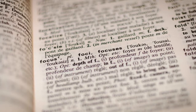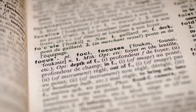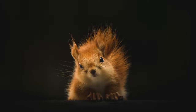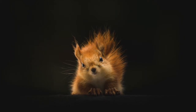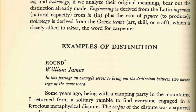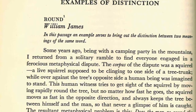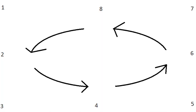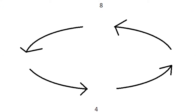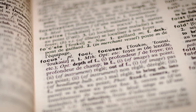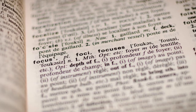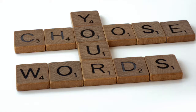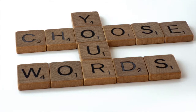Although one or two of the hotter disputants called my speech a shuffling evasion, saying they wanted no quibbling or scholastic hair-splitting, but meant just plain, honest, English 'round,' the majority seemed to think that the distinction had assuaged the dispute. This fun little story illustrates, in a simple way, how important making distinctions can be. The trick of the story relies on an ambiguity in the definition of the word 'round,' and looking up the word in a dictionary wouldn't actually have settled the argument, since the dictionary contains both of the different kinds of meanings they were arguing over, and even other possible definitions of the word. So it really wasn't about the dictionary definition — it was more about how they wanted to agree about the term and how they were using it.